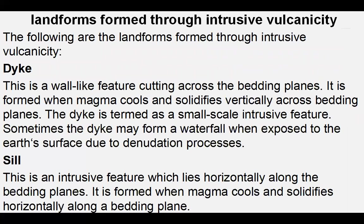The first one is a dyke. A dyke is a wall-like feature cutting across the bedding planes. It is formed when the magma cools or solidifies vertically across the bedding plane.